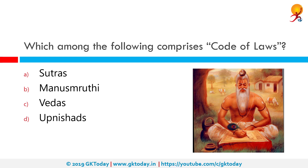Which among the following comprises a code of laws? The correct answer is Manu Smriti. The laws of Manu was a hybrid moral-religious law code and one of the first written law codes in Asia. In spite of its age, it has still sustained paramountcy in Hindu culture.